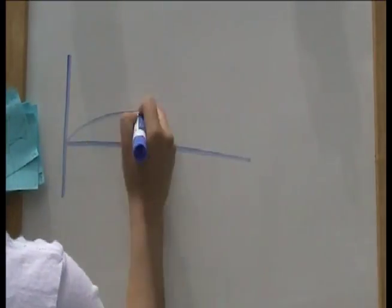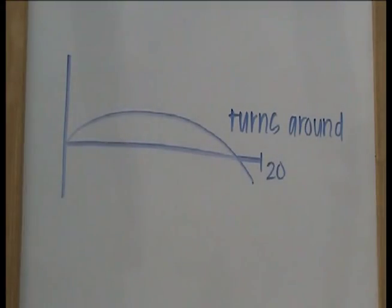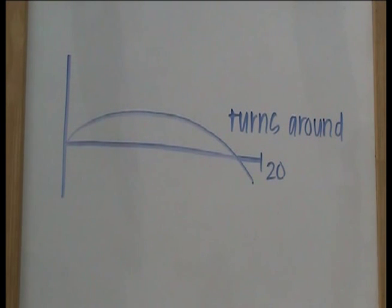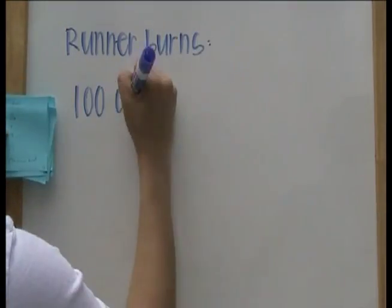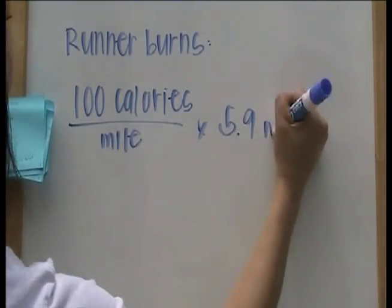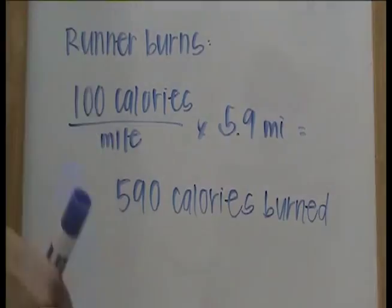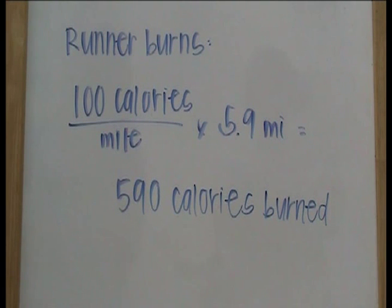The graph of the runner's velocity shows that she turns around just before the 20 minutes is up, which is why her displacement is less than her total distance. The runner burns 100 calories per mile and runs a total of 5.9 miles, so she ends up burning 590 calories.